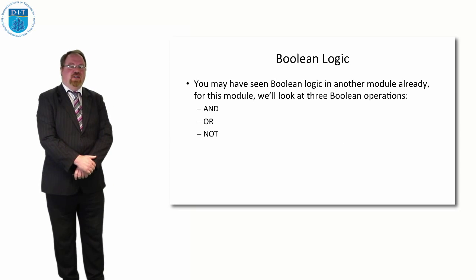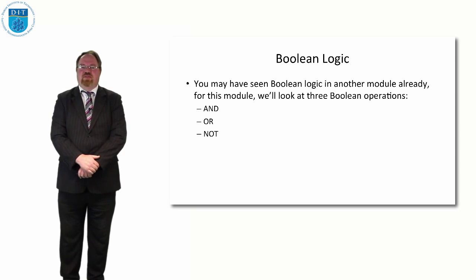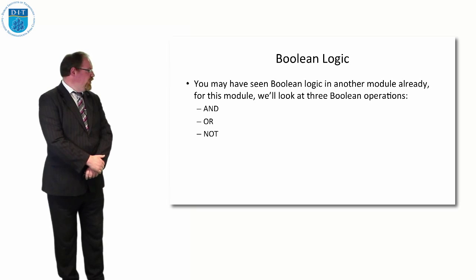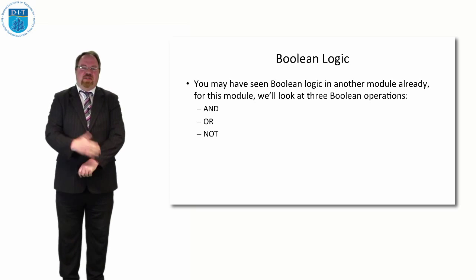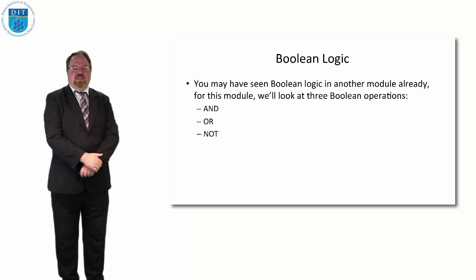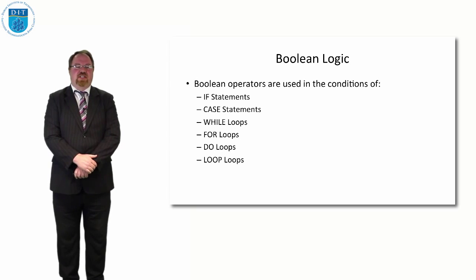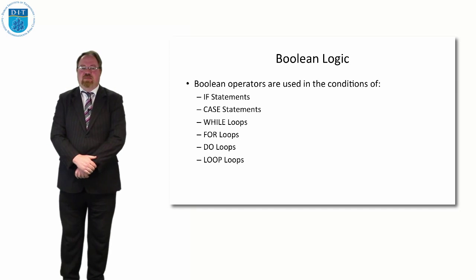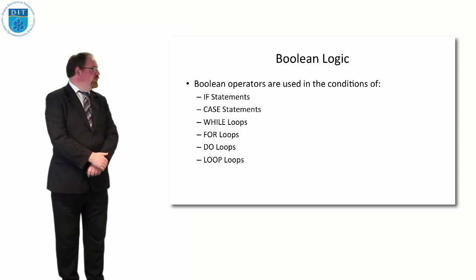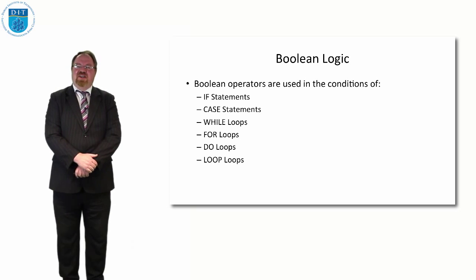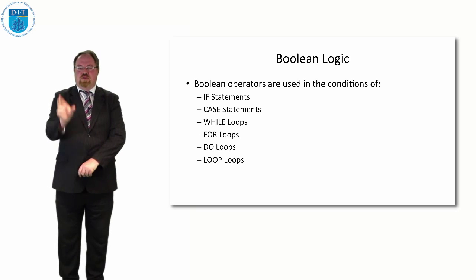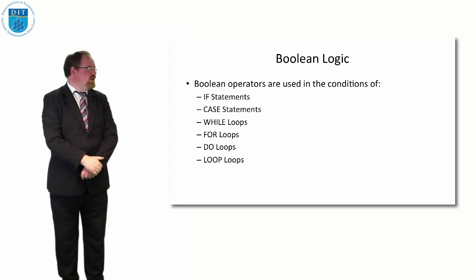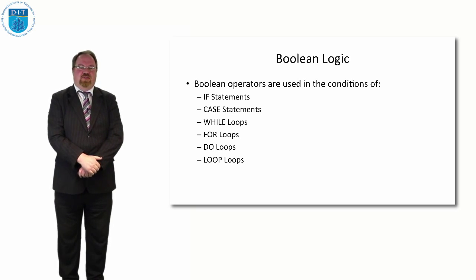For programming, we're going to look at three different Boolean operators or operations: the AND command, the OR command, and the NOT command. So when we're doing things like IF statements, CASE statements, WHILE loops, FOR loops, DO loops, and even LOOP loops, we can use AND, OR, and NOT to modify the conditions in each of those statements or loops.